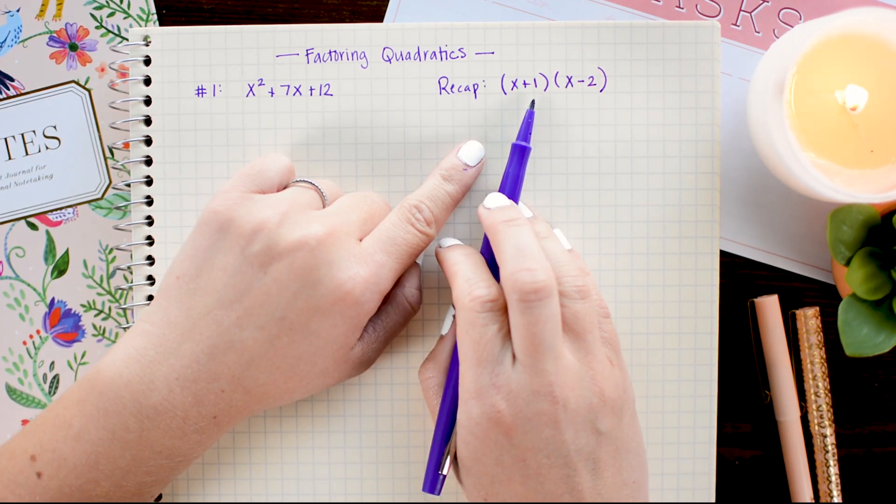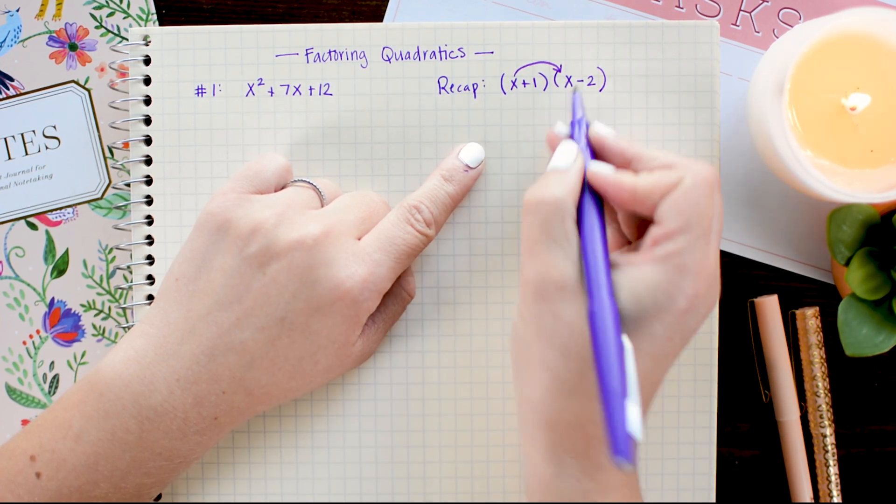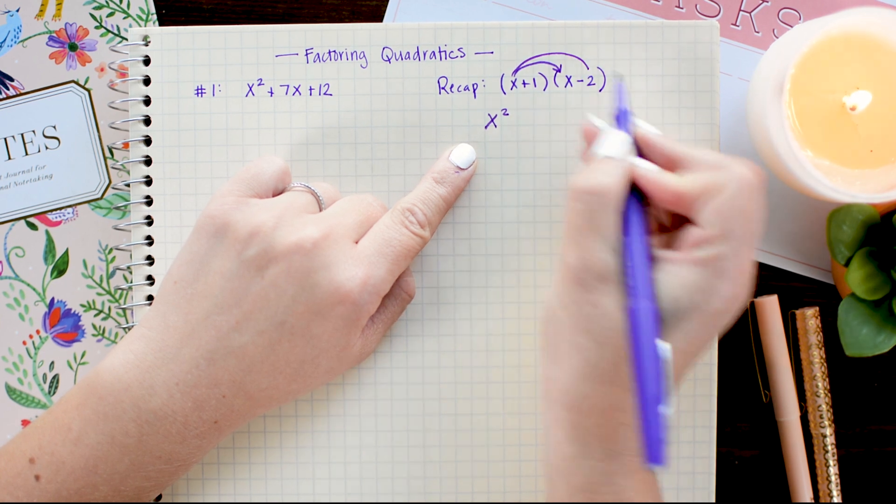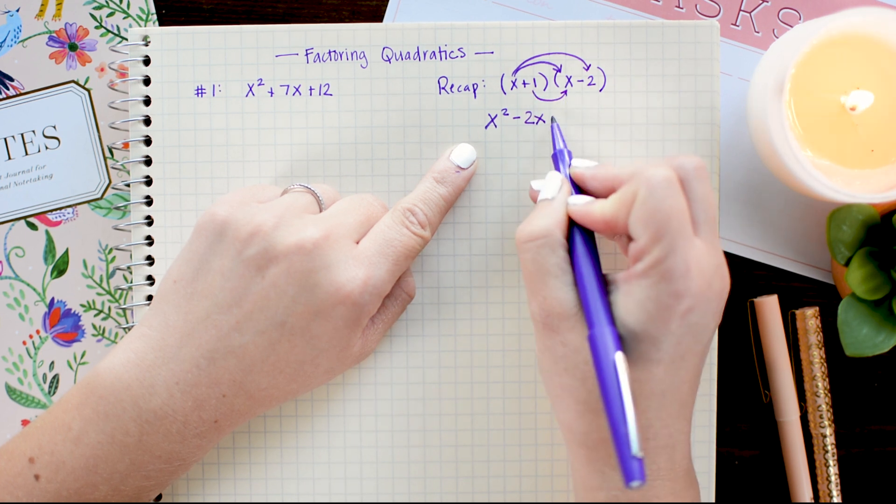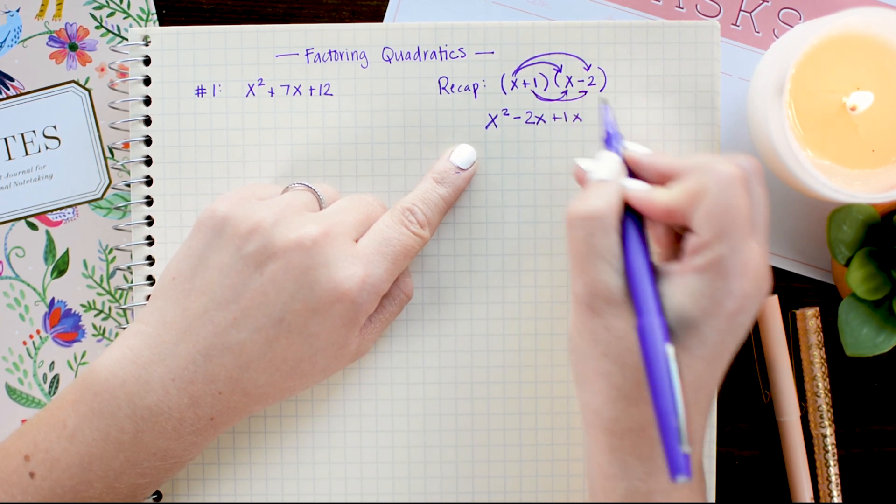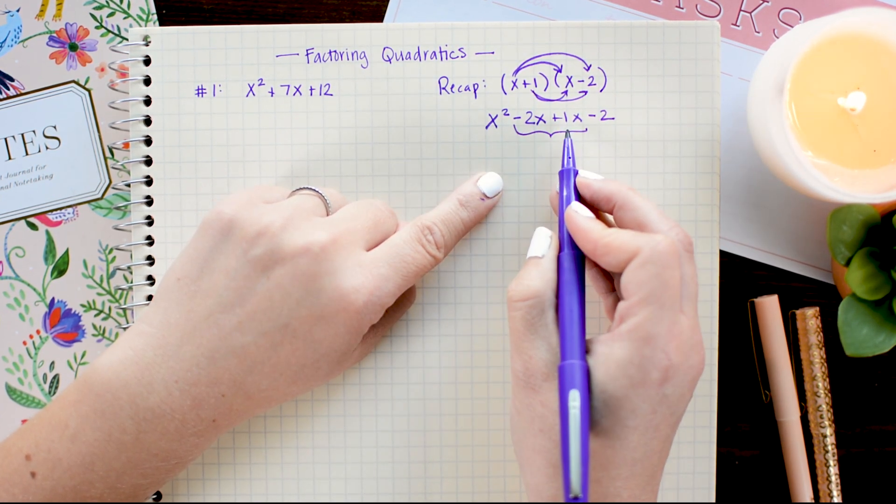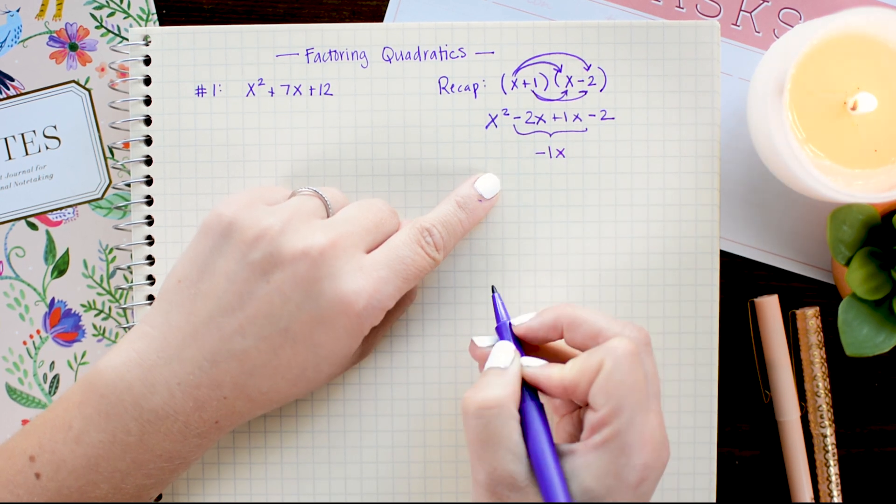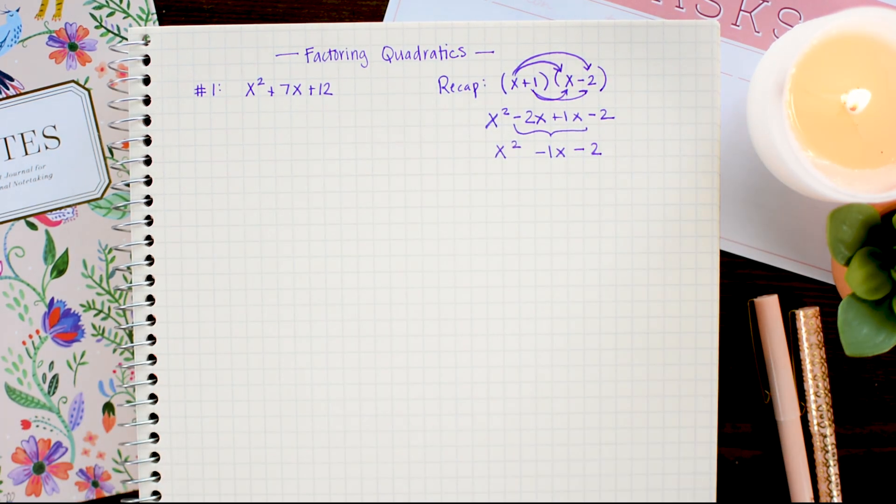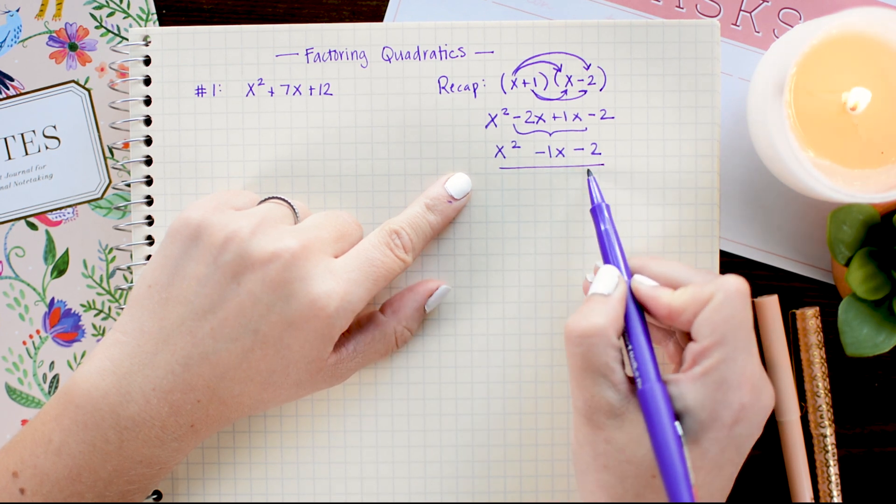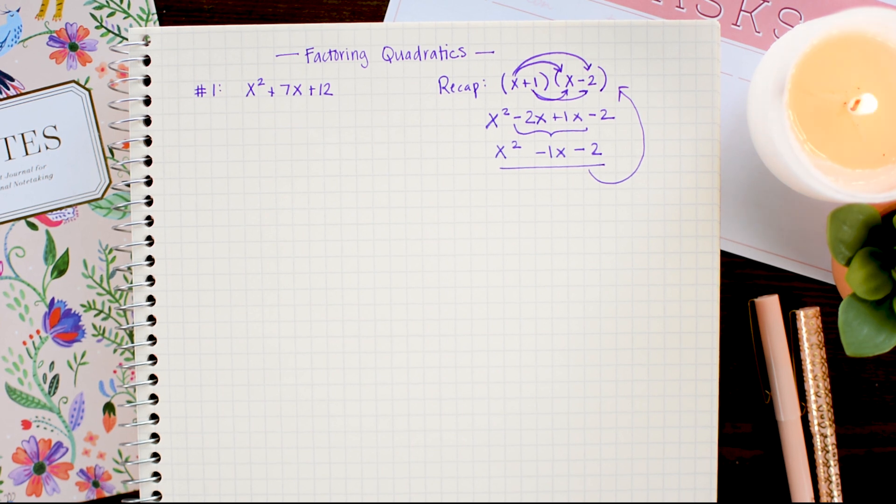So if we were to multiply x plus 1 with x minus 2, I would go ahead and multiply the x through. So x times x is x squared, and x times negative 2 is negative 2x. 1 times x is 1x, and 1 times negative 2 is negative 2. I then combine the like terms. Negative 2x plus 1x is negative 1x. And write my answer as x squared minus 1x minus 2. Now what I want to do is to go from here back to here. So it takes a tiny bit more thought, but it's not too bad.